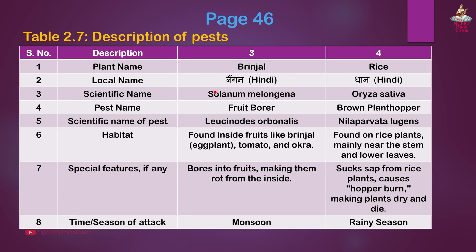Third pest: Brinjal. Local name: Baingan in Hindi. Scientific name: Solanum melongena. Pest name: Fruit borer. Scientific name of pest: Leucinodes orbonalis. Habitat: Found inside fruits like brinjal, eggplant, tomato and okra. Special features: Bores into fruits making them rot from the inside. Season of attack: Monsoon.